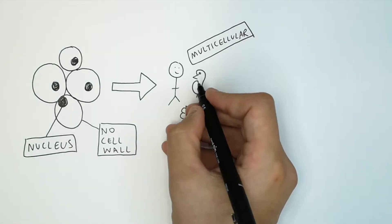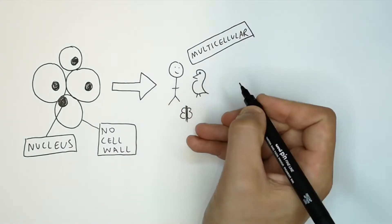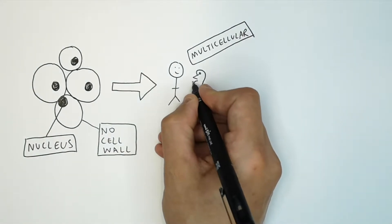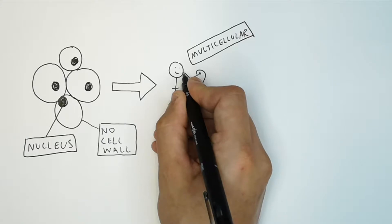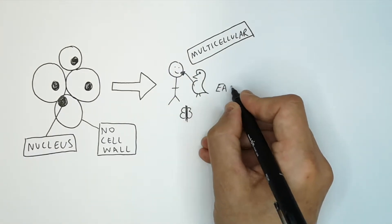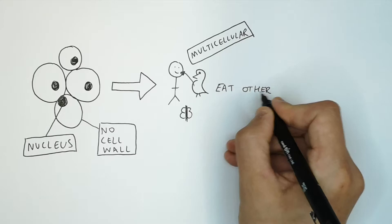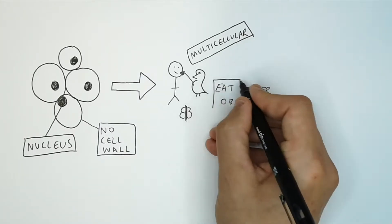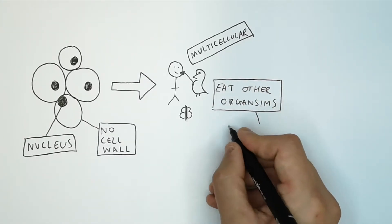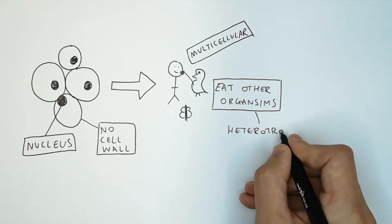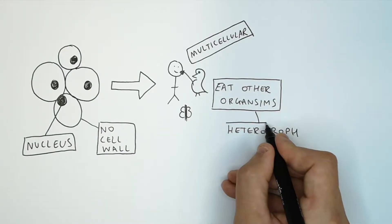Consider three animals: humans, birds, and butterflies. The human eats the bird, and the butterfly is eaten by the bird. Animals eat other organisms — that makes them a heterotroph. A heterotroph is an organism that eats another organism.